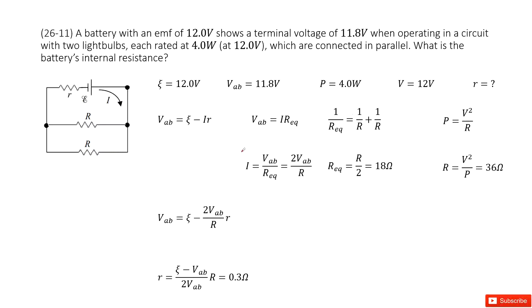Chapter 26 is about DC circuits. We have a battery with emf of 12 volts and terminal voltage of 11.8 volts. This battery is connected to two light bulbs in parallel. For each light bulb, the power is 4 watts at 12 volts. What is the battery's internal resistance?